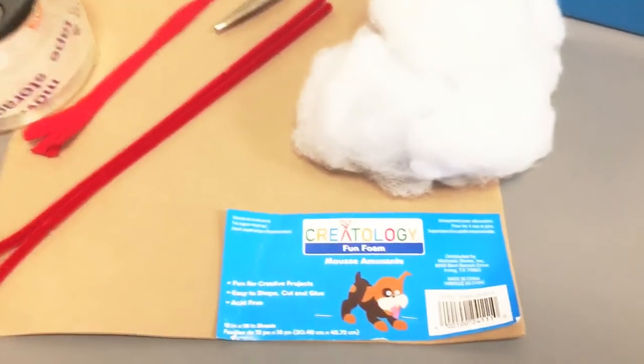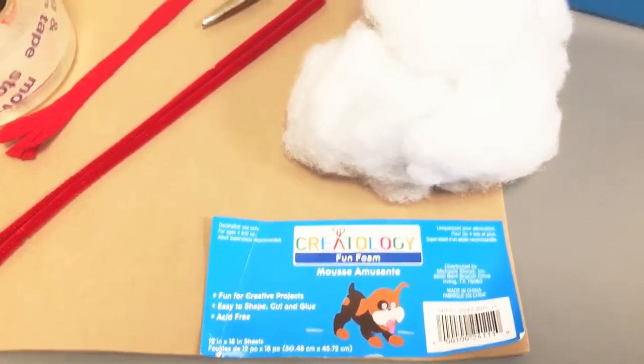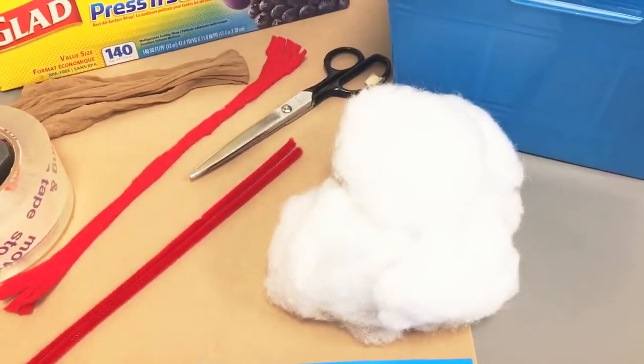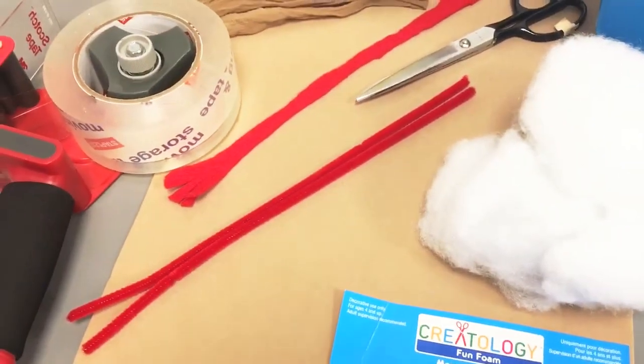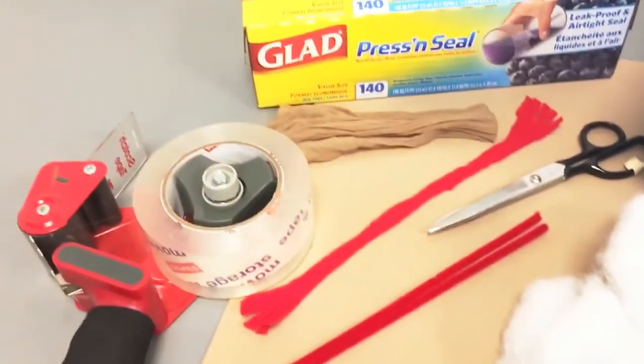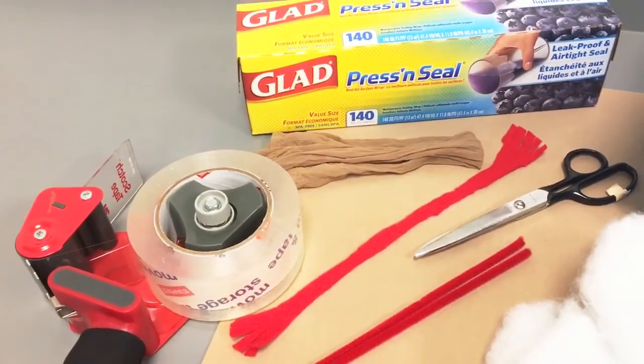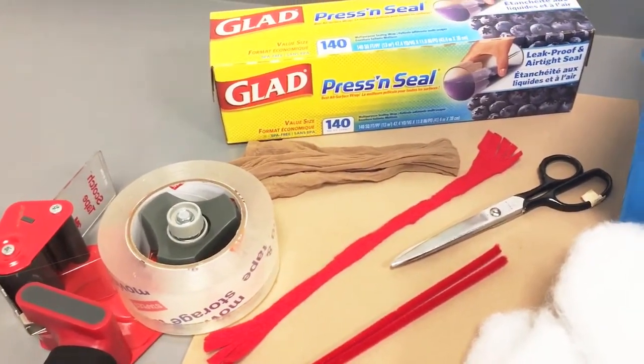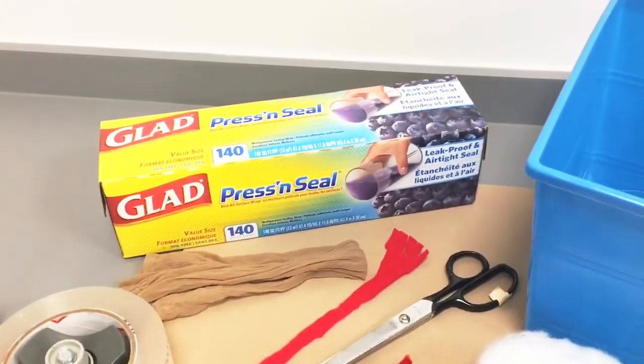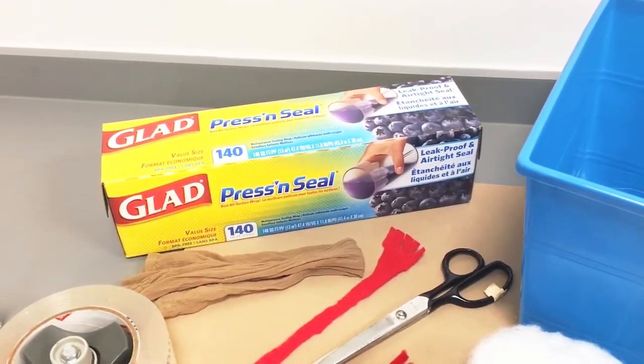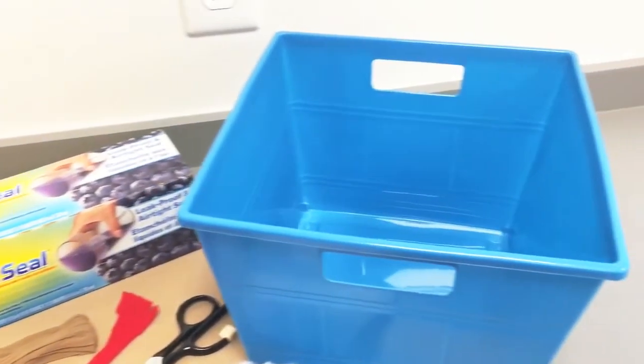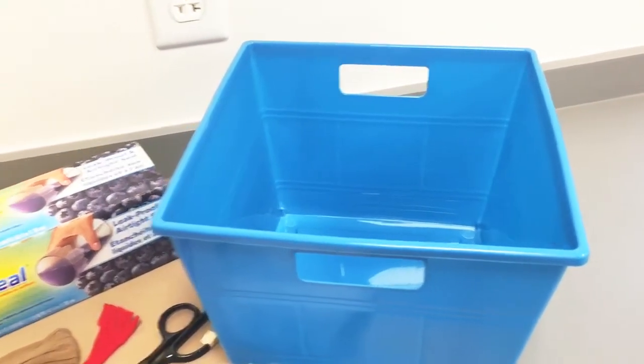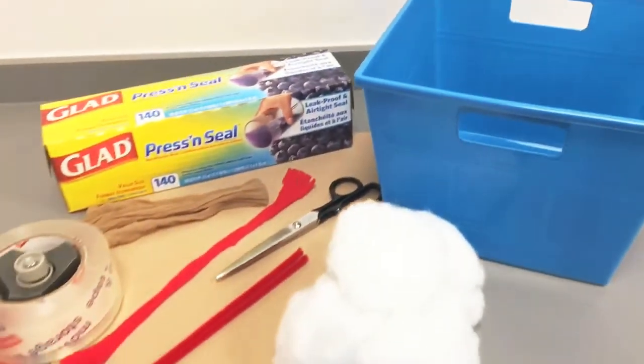The supplies needed include a piece of fun foam, cotton stuffing, pipe cleaners, felt which is preferably pink or red, packing tape, nylon pantyhose, plastic wrap, scissors, and a plastic bin preferably with openings on the side.